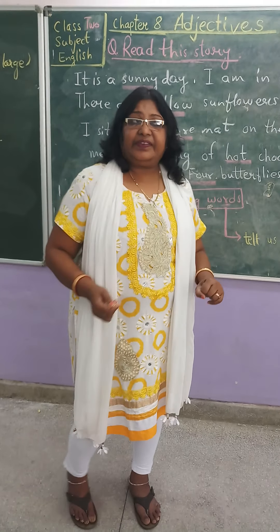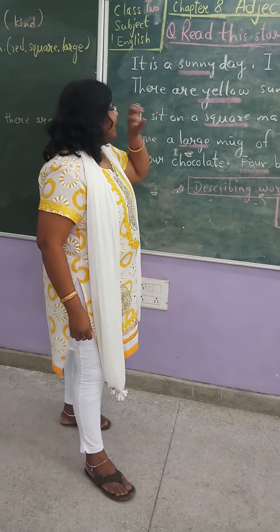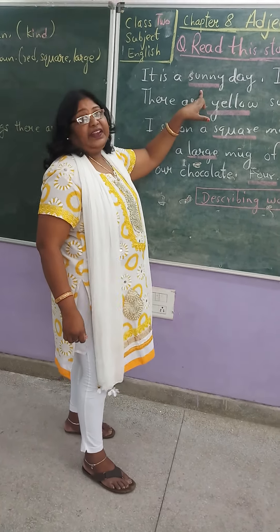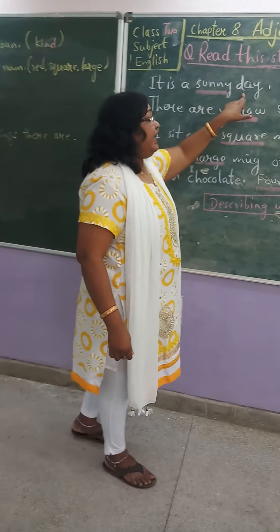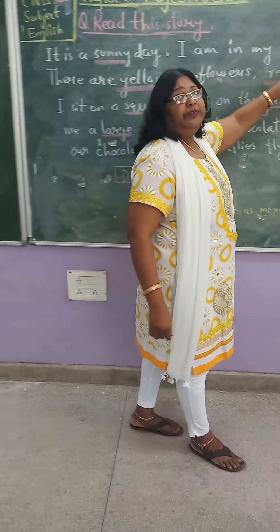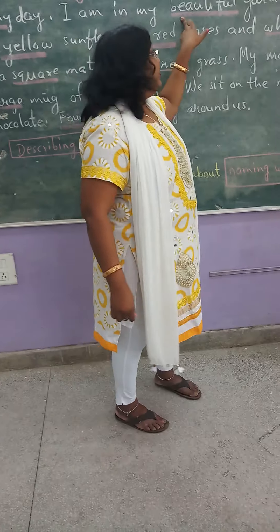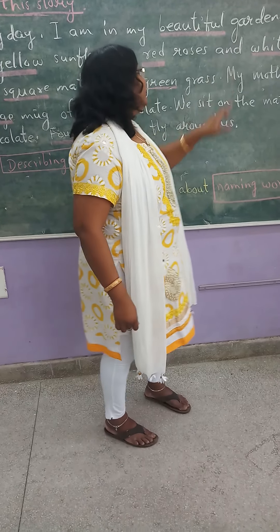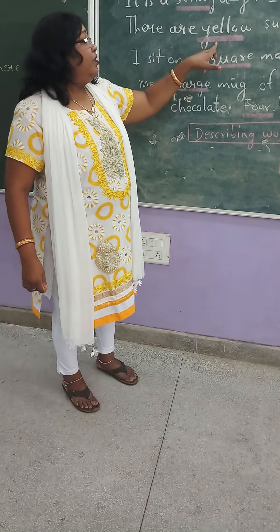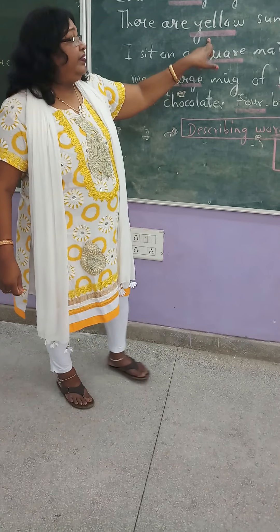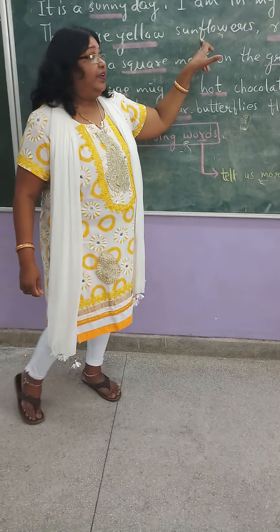Do you know why we call them describing words? Because they describe the naming words. If you see the word sunny — the word sunny describes day. The word beautiful describes garden. The yellow color describes sunflowers.